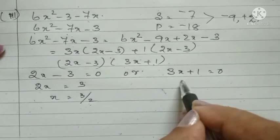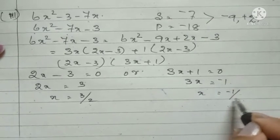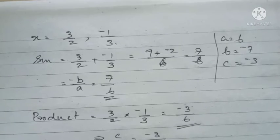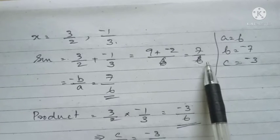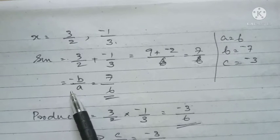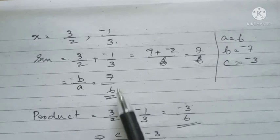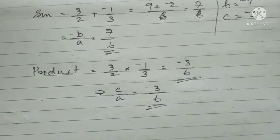From 2x = 3, x = 3/2. From 3x = minus 1, x = minus 1/3. Verification: sum = 3/2 + (minus 1/3) = 7/6. By formula, minus B by A = minus(minus 7) by 6 = 7/6. For the product: 3/2 × (minus 1/3) = minus 3/6. By formula, C by A = minus 3 by 6 = minus 3/6. Both match, so it is verified.